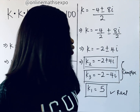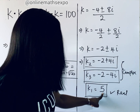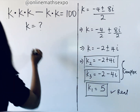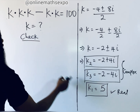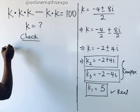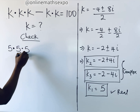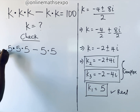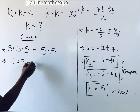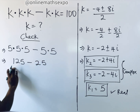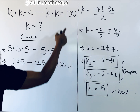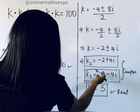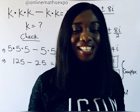Now let's check k = 5. We plug it in: 5 × 5 × 5 - 5 × 5 = 125 - 25 = 100. That equals the right side of the equation, confirming k = 5 is correct. You can also check the complex values and discuss your answers in the comments.